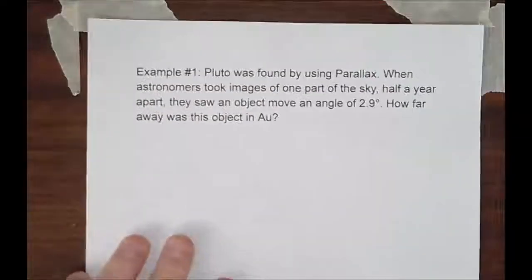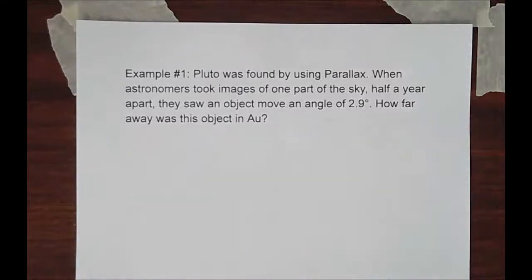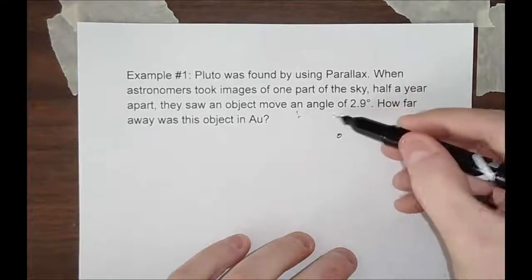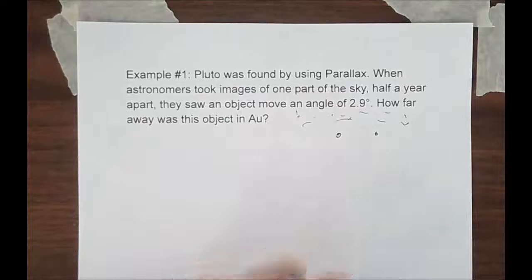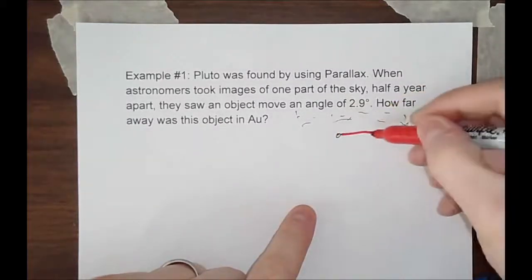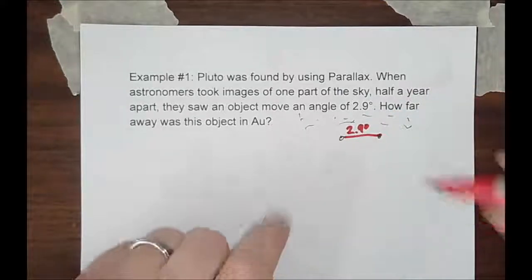I've got some examples here. Example 1. Pluto was found by using parallax. So, astronomers took images of one part of the sky, and half a year later, they saw an object move with an angle of roughly 2.9 degrees in the night sky. So, pretty much, they saw Pluto doing this. So, here's our background stars. And, they saw Pluto jumping back and forth. Okay? And, this angle was 2.9 degrees.